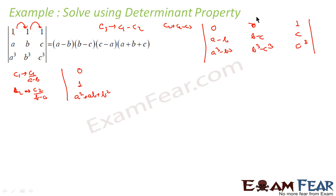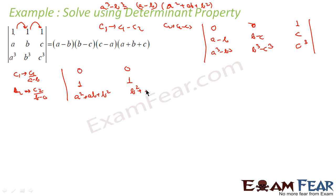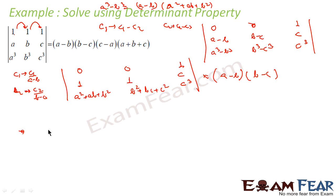C2 divided by b minus c: 0 over b minus c is 0, b minus c over b minus c is 1, and b cubed minus c cubed over b minus c gives b squared plus bc plus c squared. Since we are not doing anything to C3, we keep it entire. Now we have got two zeros, so we can simplify. This becomes a minus b into b minus c as the common factors taken out.